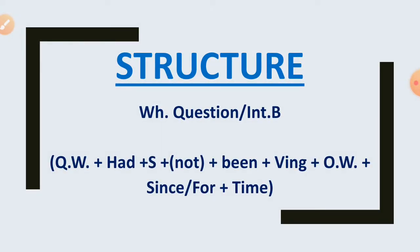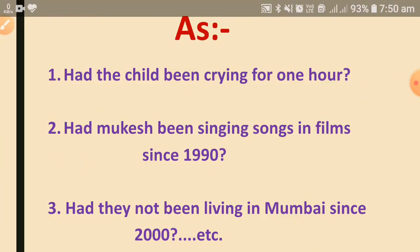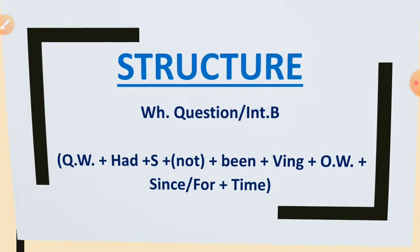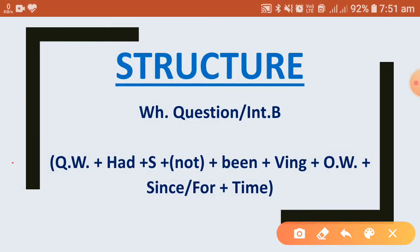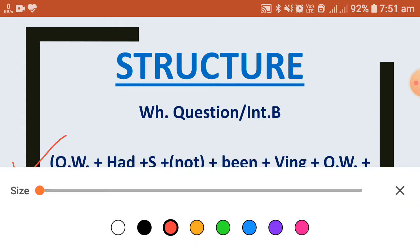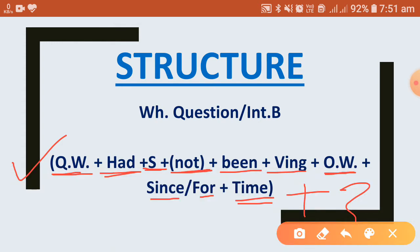Now let us see the structure for WH questions. The structure is: Question word + had + subject + (not, if negative) + been + ing form of the verb + other word + since/for + time + question mark. The question mark is used at the end of the sentence.